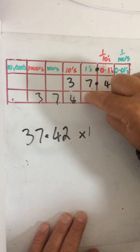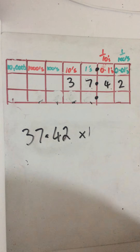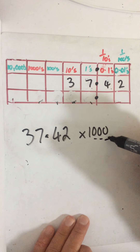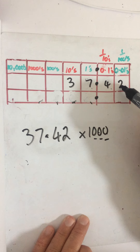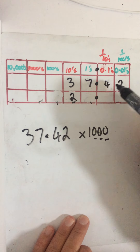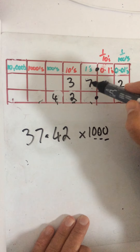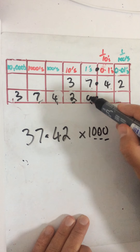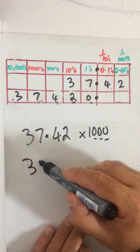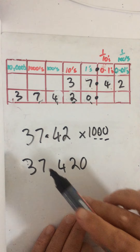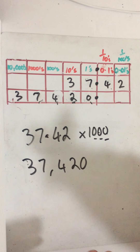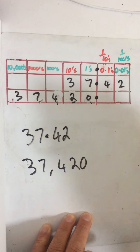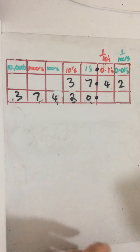And if we were doing this number times a thousand — there are three zeros in a thousand, so I'm going to move each digit one space for every zero: one, two, three places. So the two goes three places, the four goes three places, the seven goes three places, and the three goes three places. I'm going to have to put a zero in as a placeholder. So it's 37,420. Remember: multiplying by 10 moves one place left, by a hundred moves two, by a thousand moves three places.